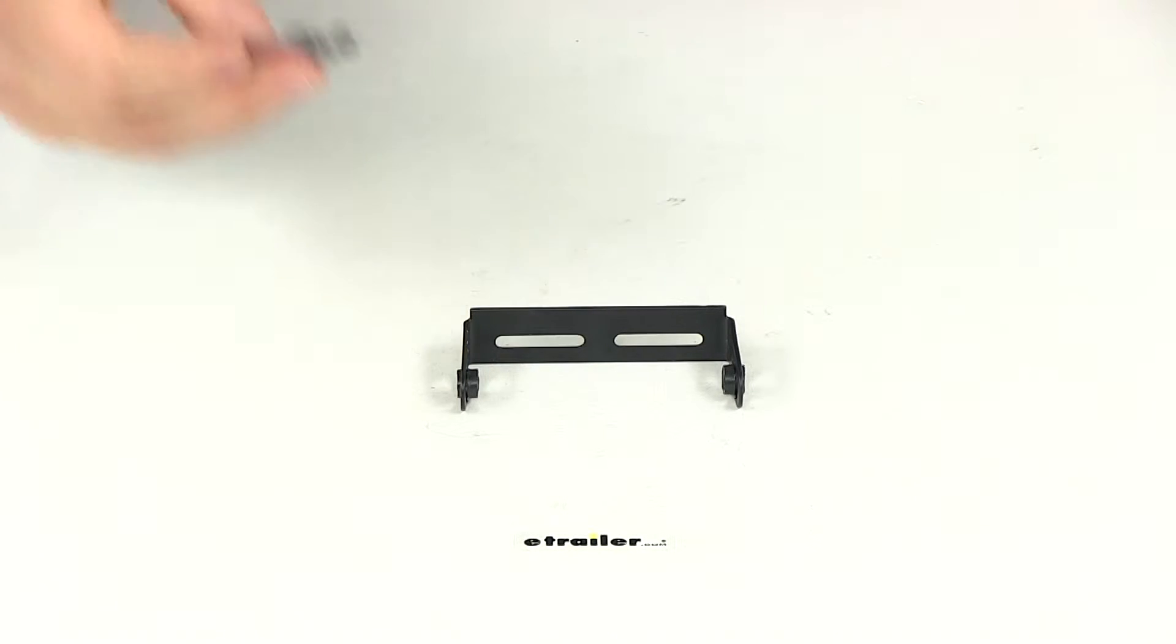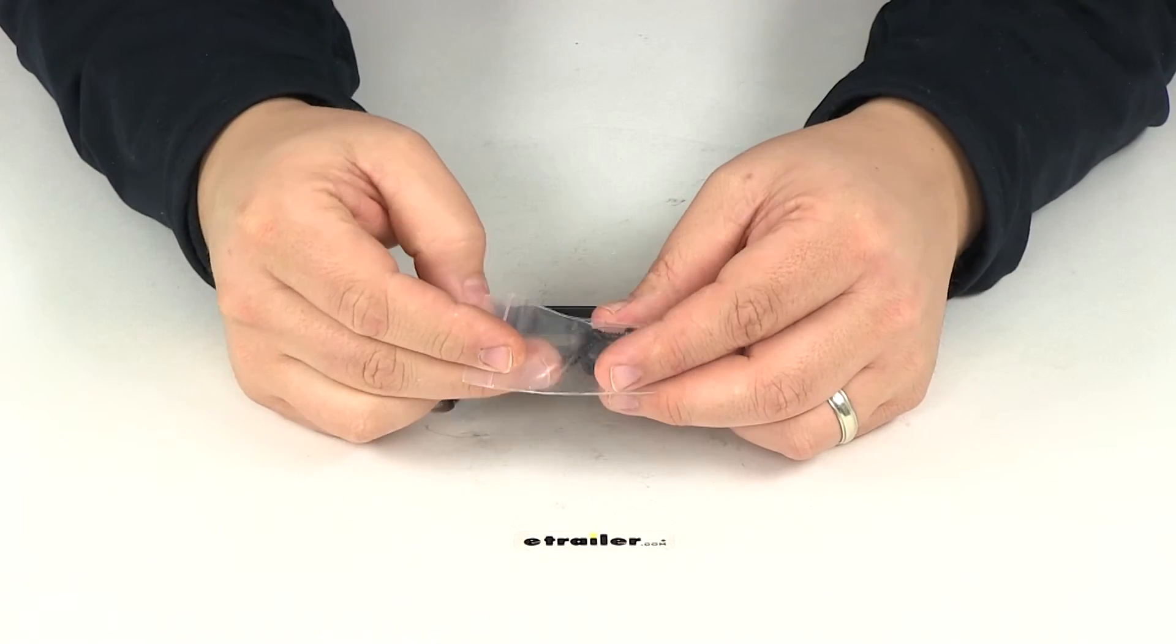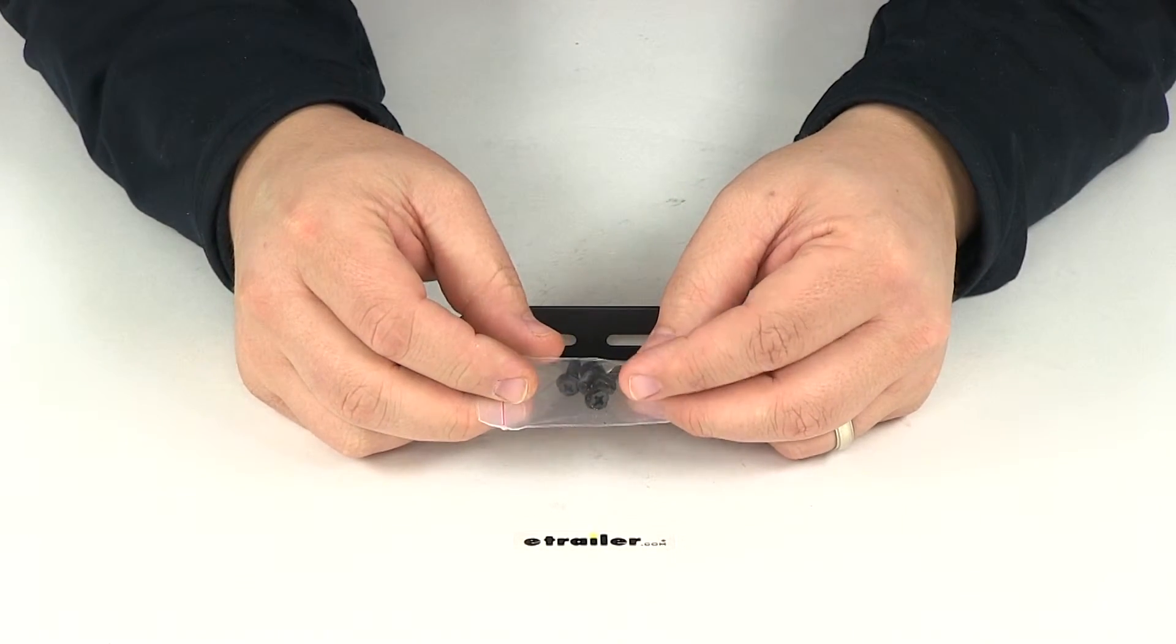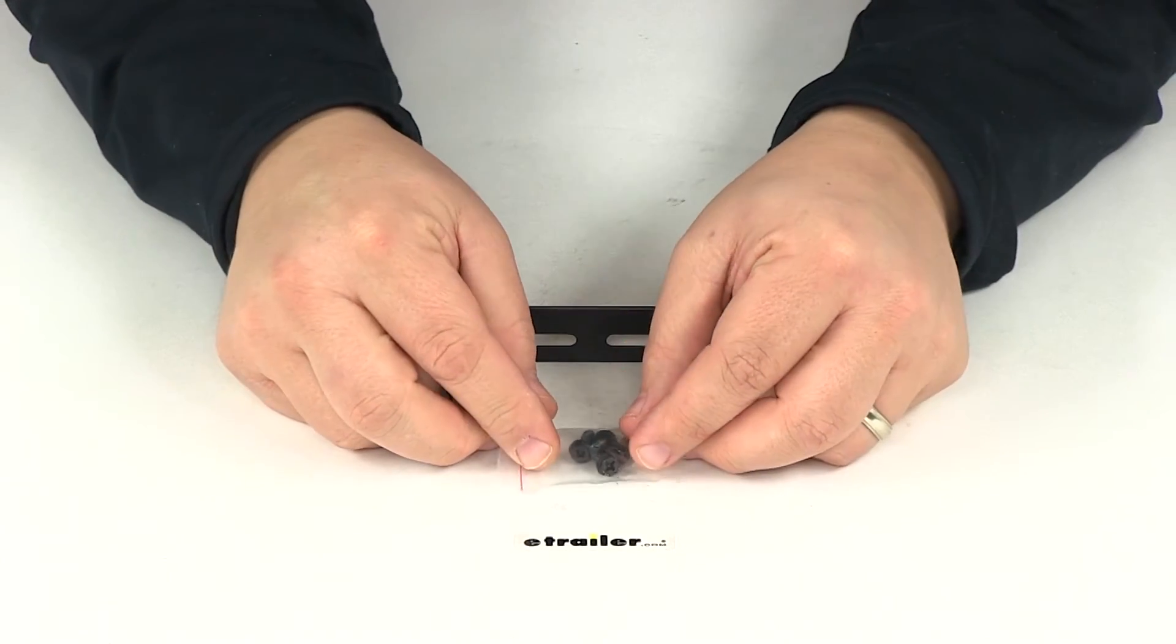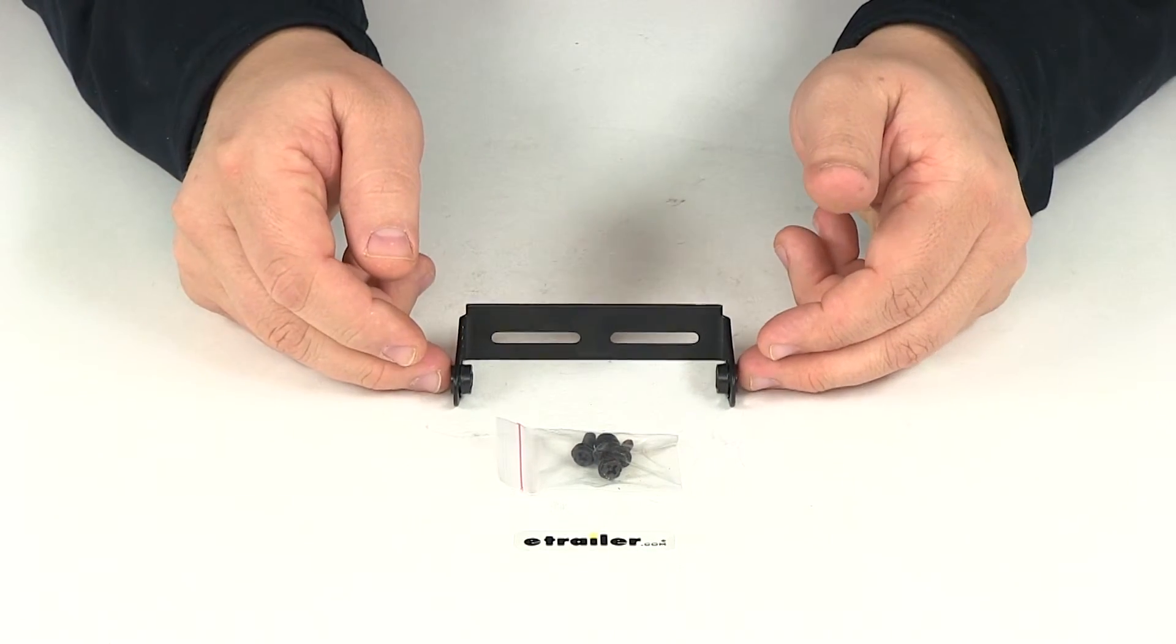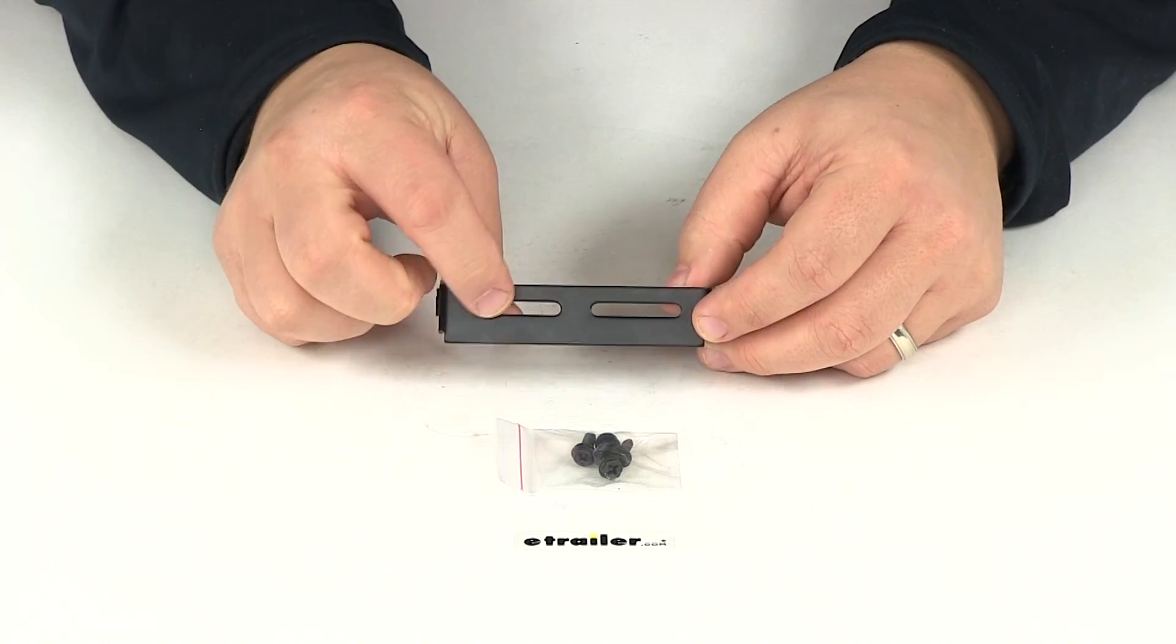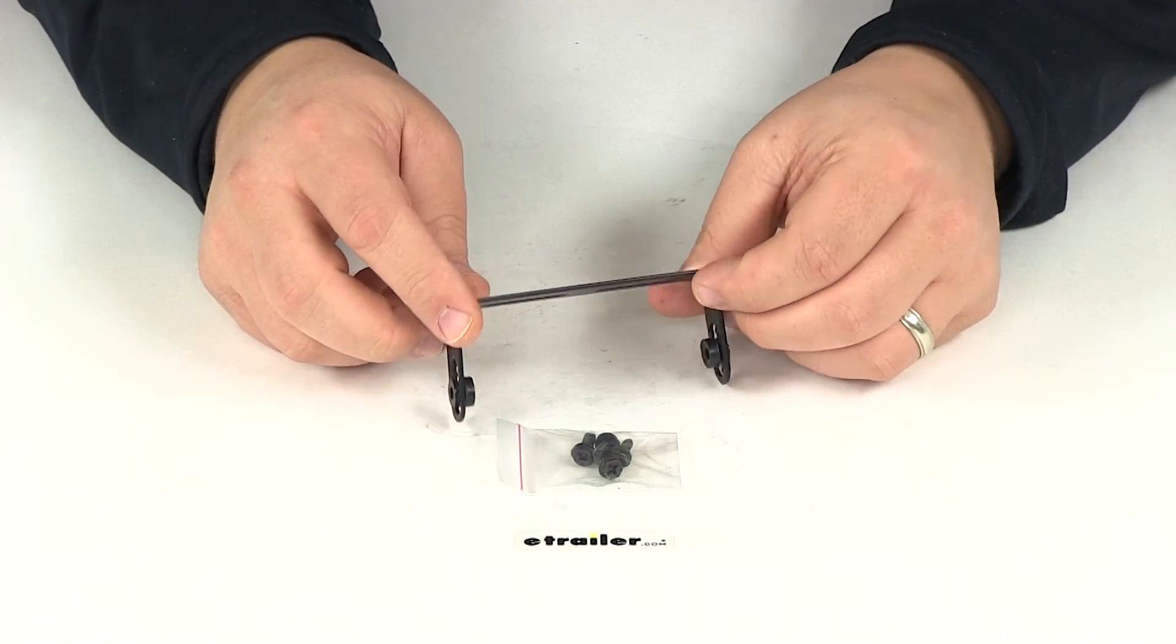It's also going to come with the mounting hardware so it comes with four screws. Two of the screws are going to be here on the side to hold the brake controller to the bracket. The other two screws are going to be used to mount the bracket under the dash of your vehicle.